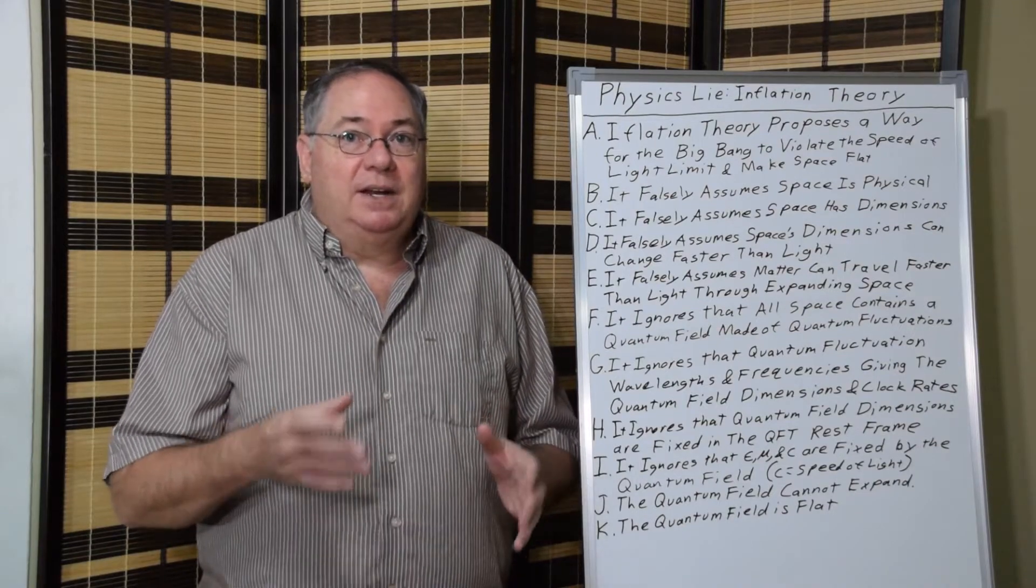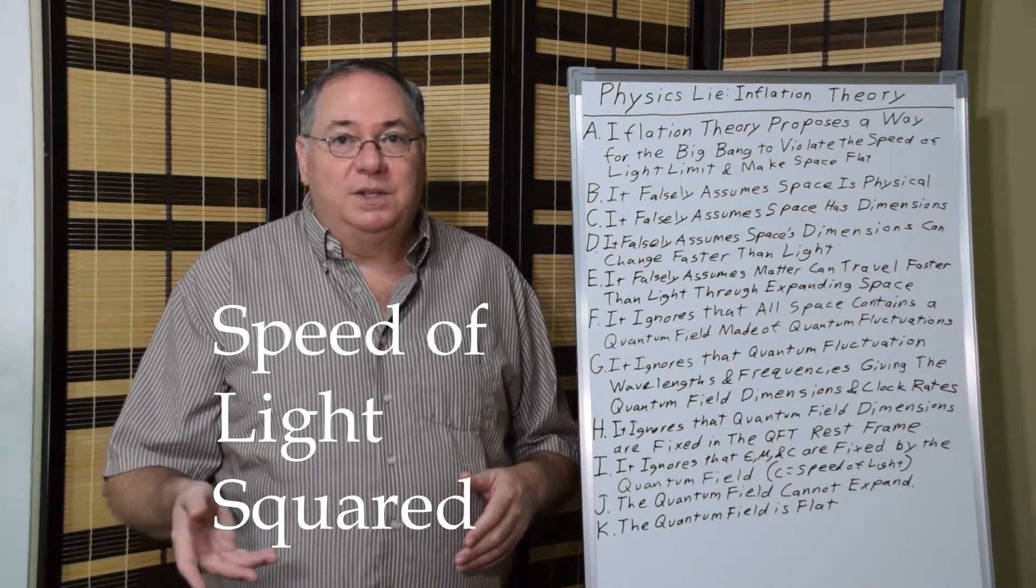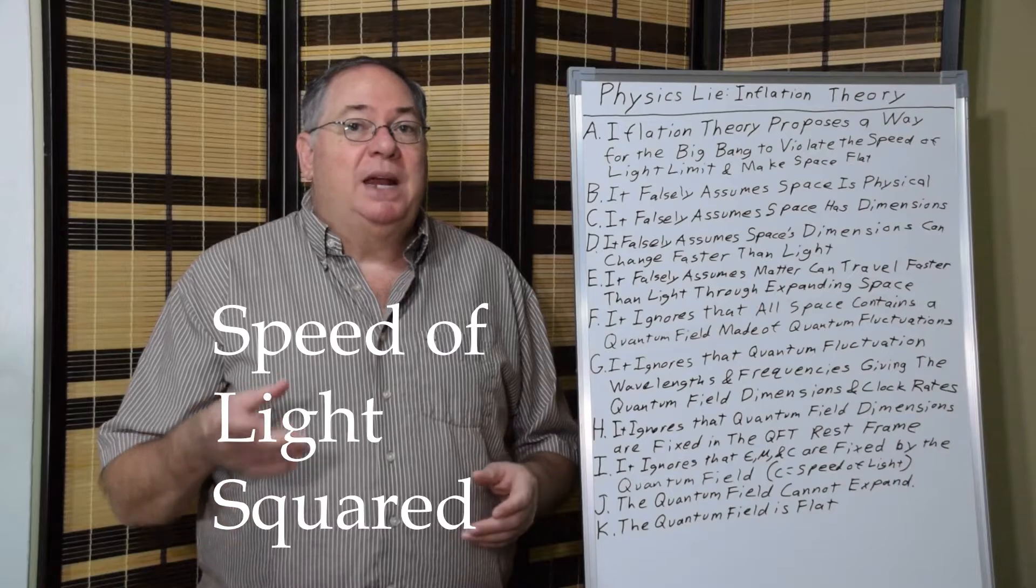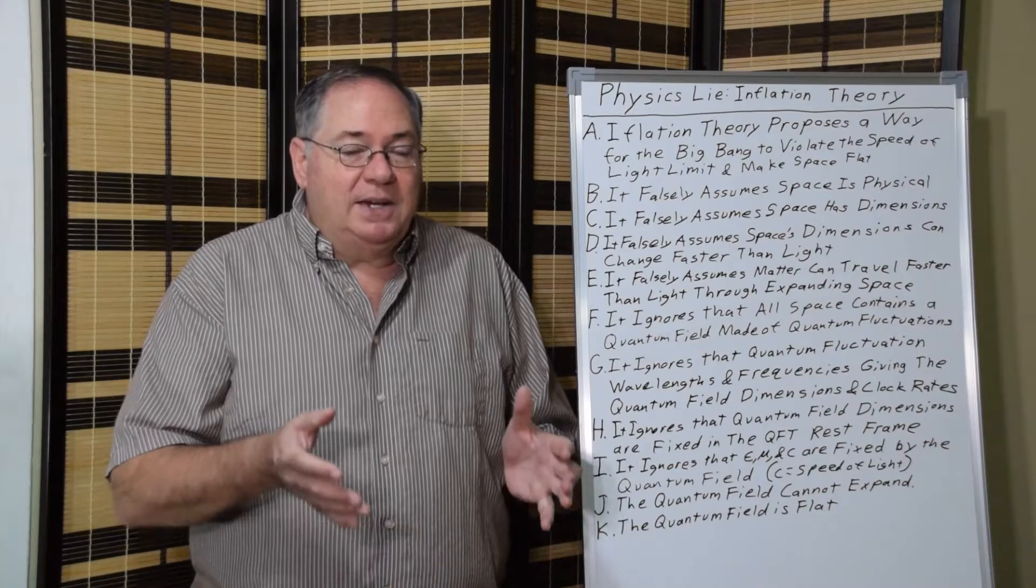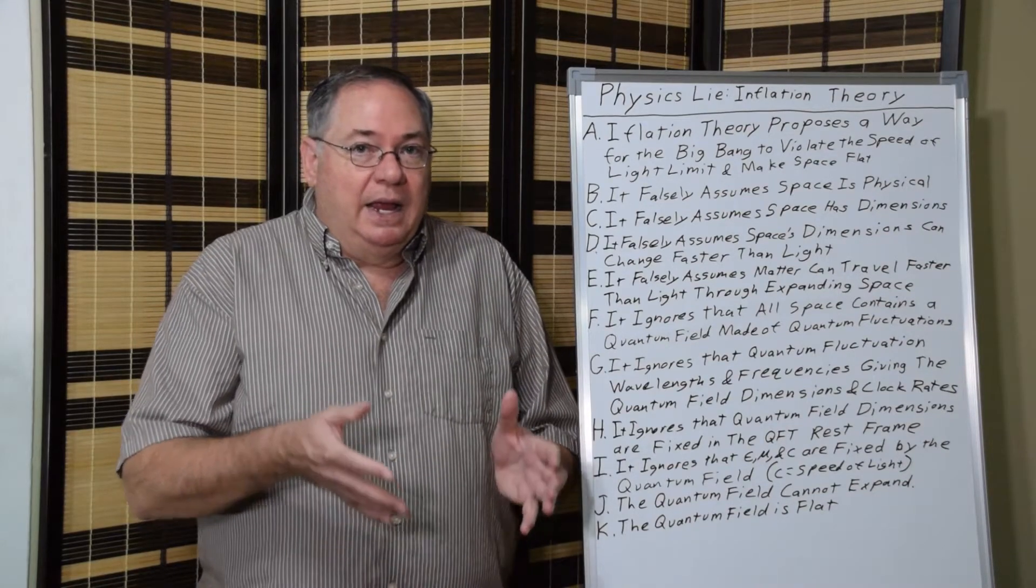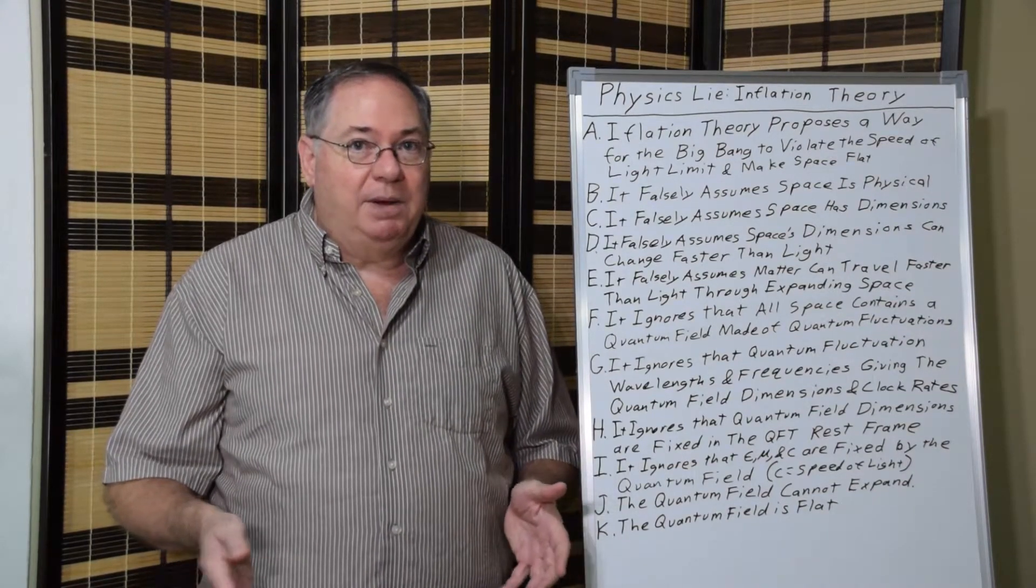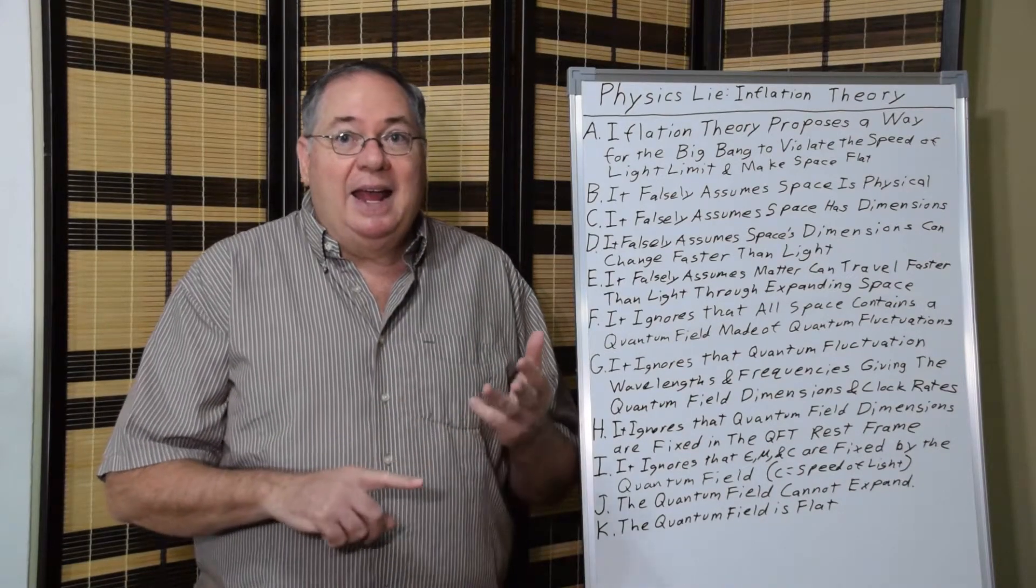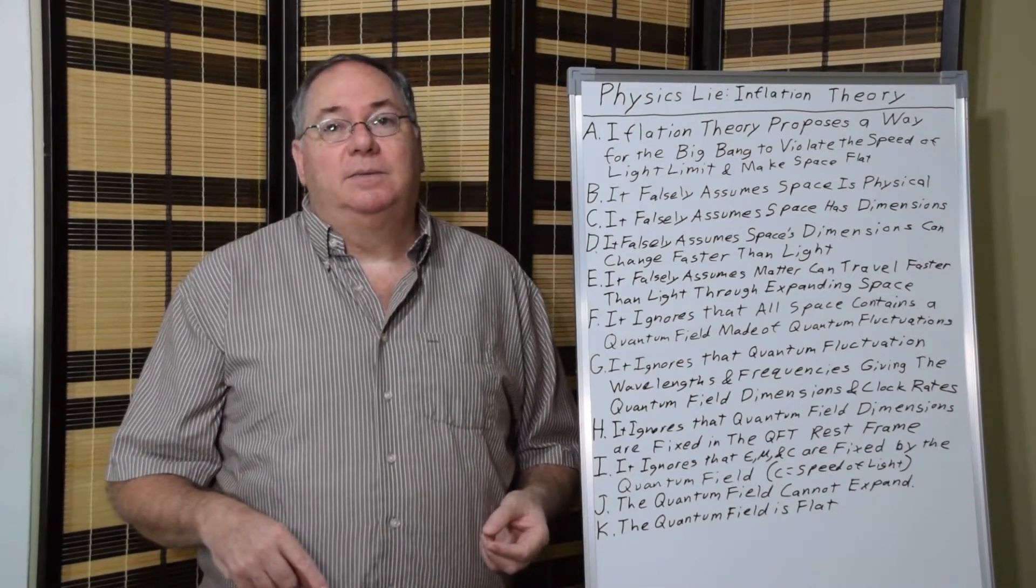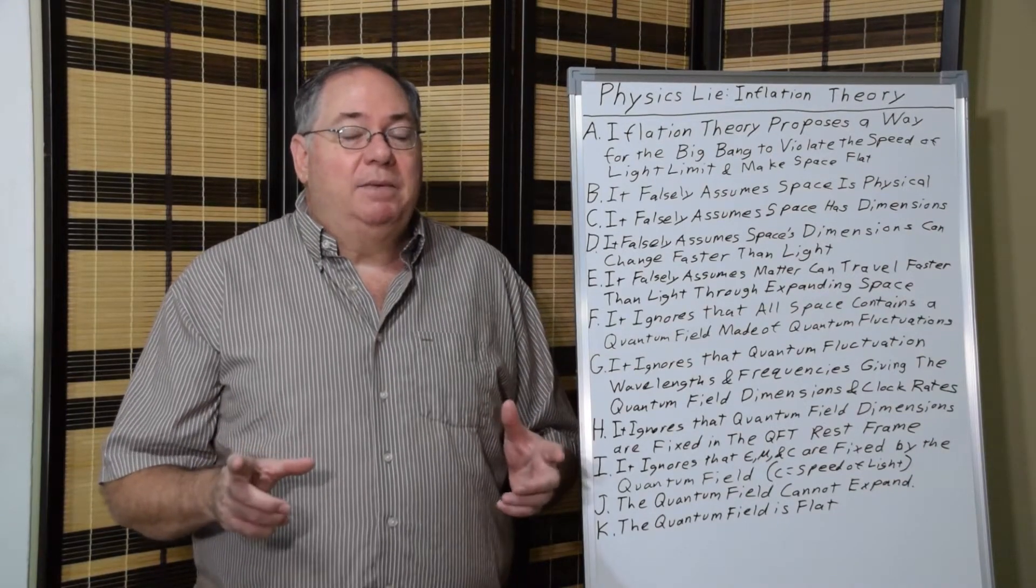And permittivity times permeability equals one over the speed of light. So the speed of light emerges from quantum field theory. So when you have space containing a quantum field, it automatically has a speed of light limit that applies to light, electrically charged bodies, and electrically neutral bodies.